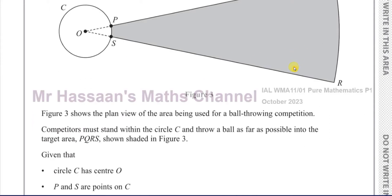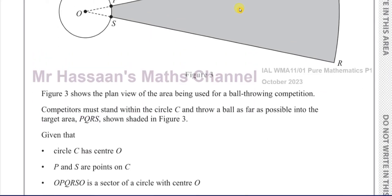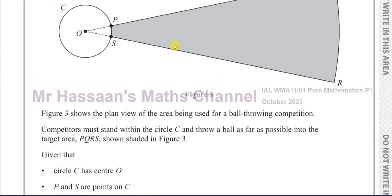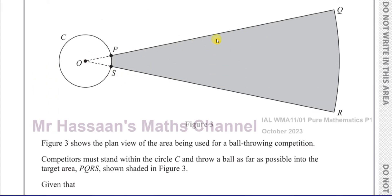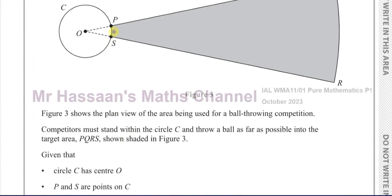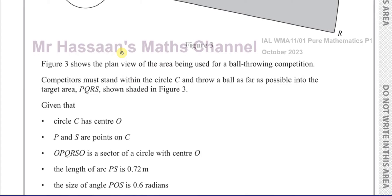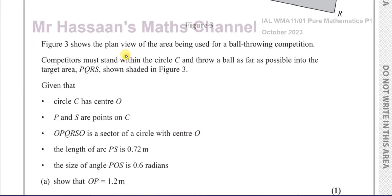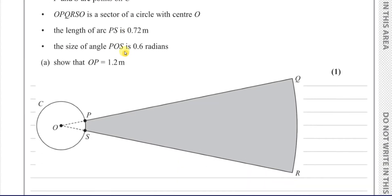We're told that the circle C has centre O. P and S are points on the circle C. O, P, Q, R, S, O is a sector of the circle with centre O. The length of arc PS is 0.72 metres, and the size of angle POS is 0.6 radians. We need to show that OP equals 1.2. I've made a little copy of the diagram with those values noted.